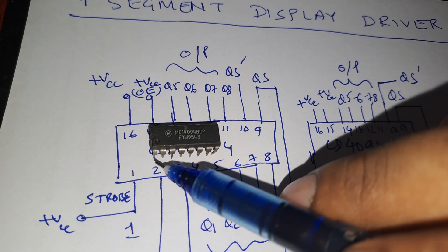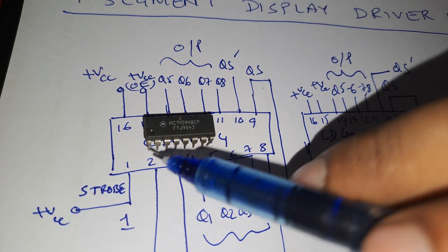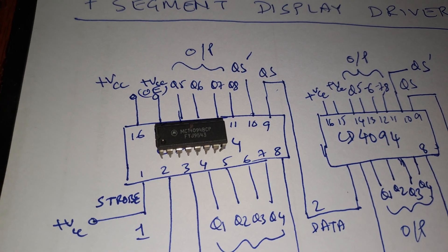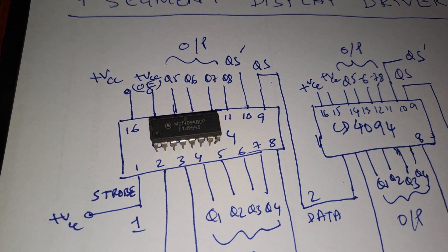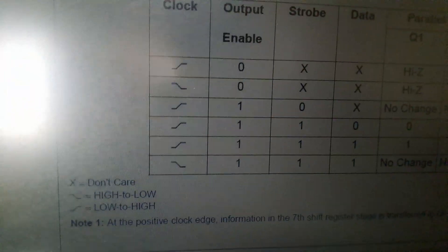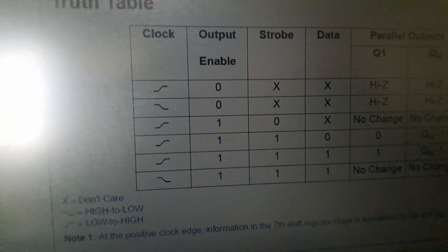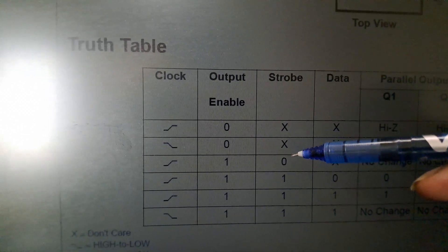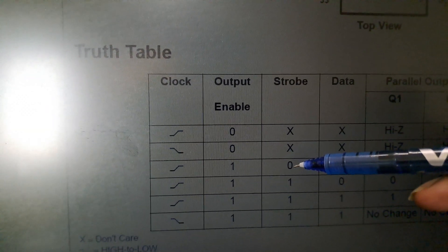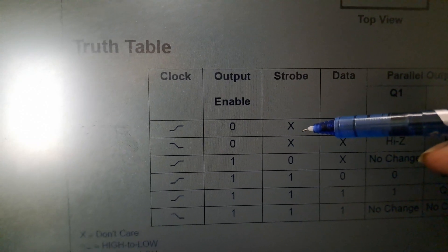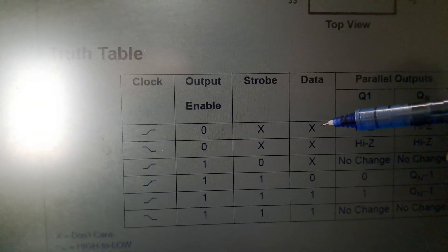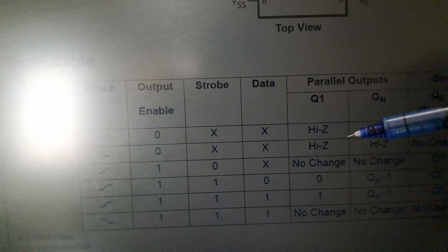Pin number one of the shift register is the strobe pin. If you look at the truth table of the shift register, you can see that if the strobe is 0 or in a don't-care condition, whatever data you give, nothing is going to happen.